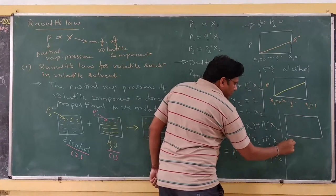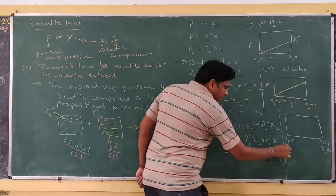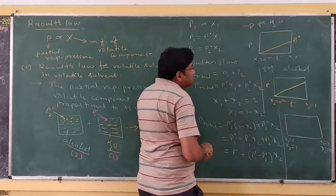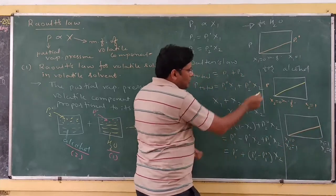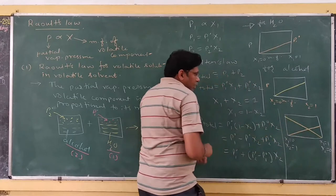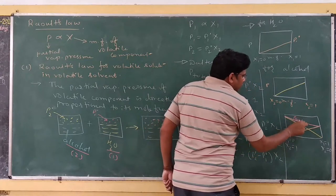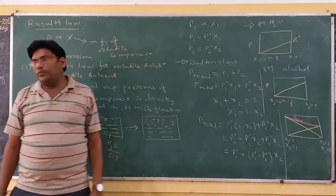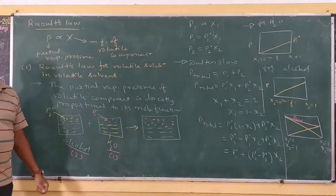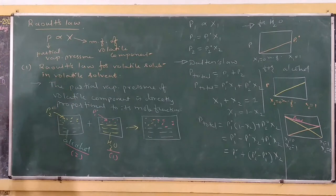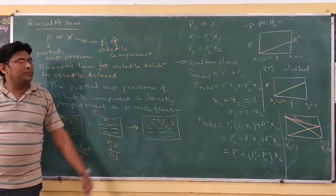Starting with x1 equal to 0 and x1 equal to 1, and x2 equal to 0 and x2 equal to 1 — for water, we draw its graph in one manner, and for alcohol, its graph in another manner. The total pressure is represented as P total equals P1 plus P2. By this way, we can say that for a volatile solute in volatile solvent, both components are volatile and they each exert partial pressures, giving P total equals P1 plus P2.